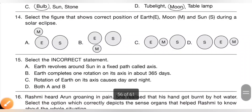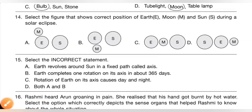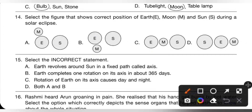14th question: select the figure that shows the correct position of earth, moon, and sun during a solar eclipse. During a solar eclipse, the moon is in between the earth and the sun. So option C is the correct answer.